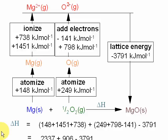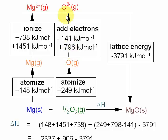Drawing a Born-Haber cycle and putting on the data gives this diagram. Here we have magnesium in the solid phase; we atomise to get it to magnesium in the gas phase, then ionise twice to get it to Mg2+. Here's oxygen as a molecule; we atomise to make oxygen atoms, then add electrons — that's the first electron affinity and the second electron affinity — to make oxide ions O2-. We can also add the lattice energy.